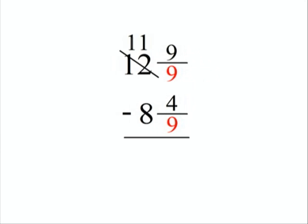Now we can subtract 4 from 9 to get 5 ninths. And the whole number is 8 from 11 which leaves 3.